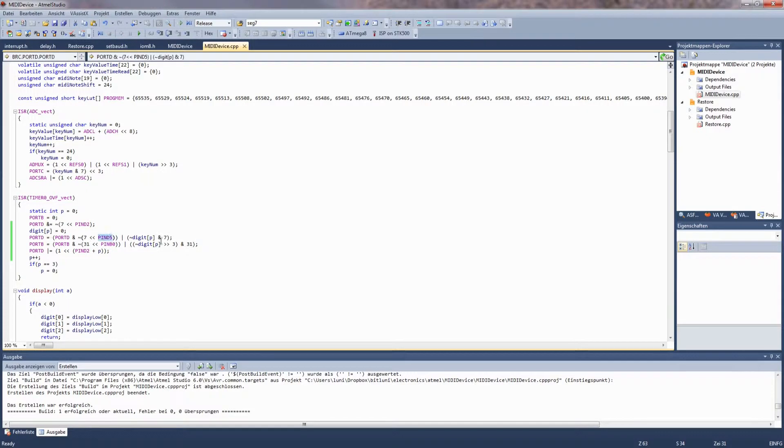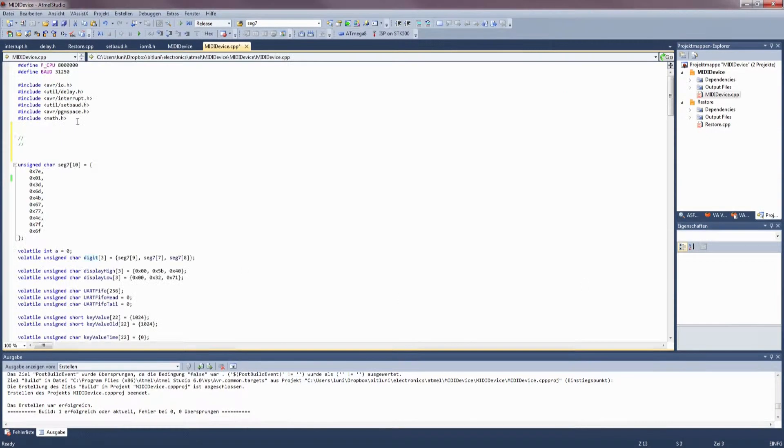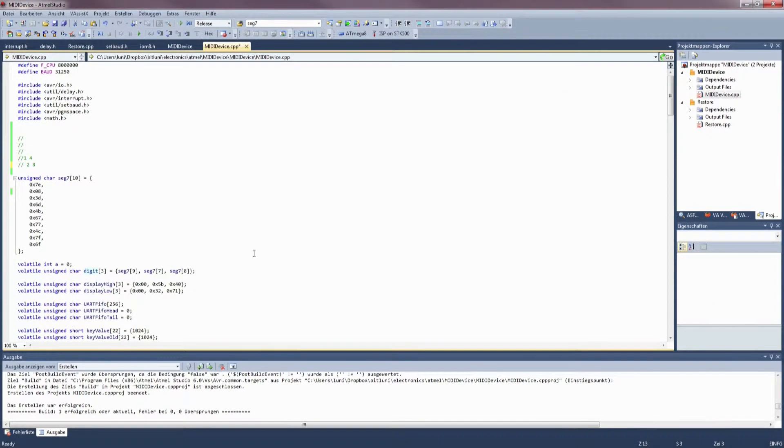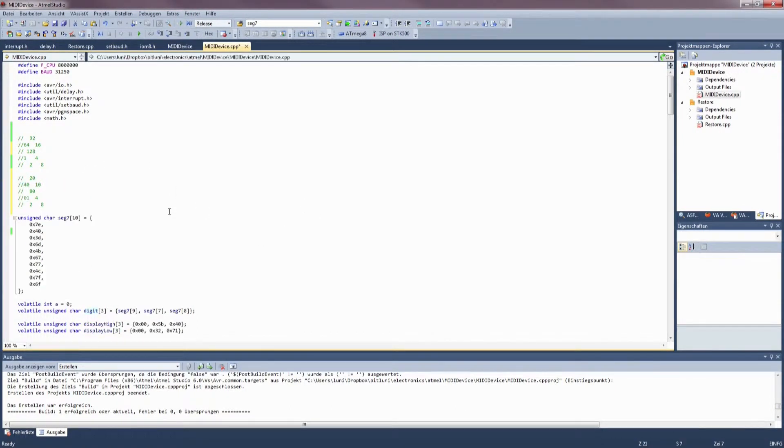After fixing the addressing of the digits, I had to find out which bit is connected to which segment on a digit. This time I made some comment notes on the bit masks.